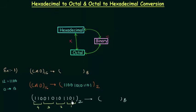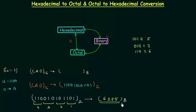In the first group we have 101, which equals 5. In the second group we again have 101, which is also 5. In the third group we have 010, which is 2. In the fourth group we have 110, which is 6. So 6255 is the octal number obtained from this binary number, meaning CAD in hexadecimal equals 6255 in octal.